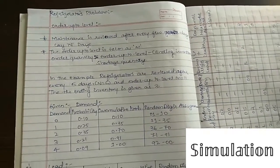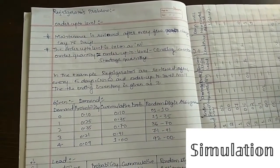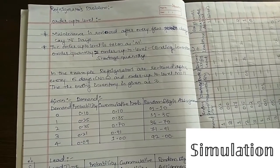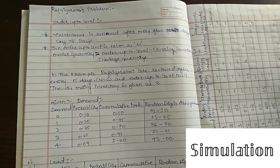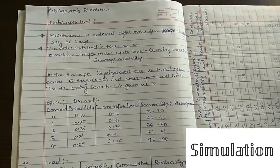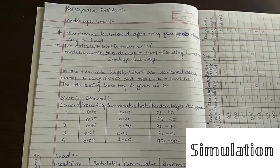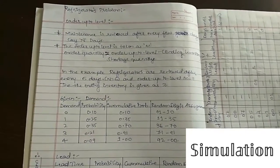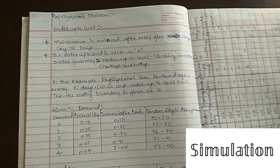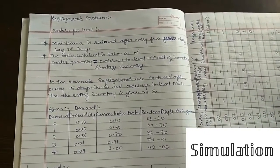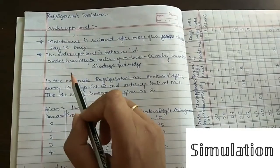In this video we will be studying about the refrigerator problem. In the previous video I told you there are two types of inventory problems — one is the newspaper problem and another is the refrigerator problem. We have done the newspaper problem in the previous video, so in this video we will be studying about the refrigerator problem.